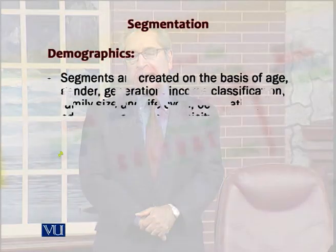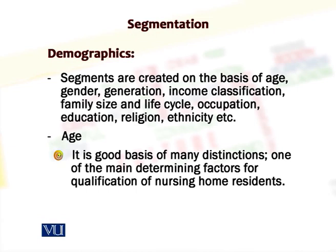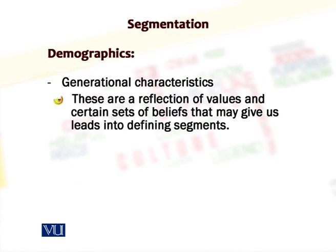Among demographic measures, age is one of the most time-honored and established ways of identifying a group with similar characteristics, similar features, similar interests, similar values, and similar behavior. For example, it is on the basis of age that we classify who is going to qualify as a resident of a nursing home.